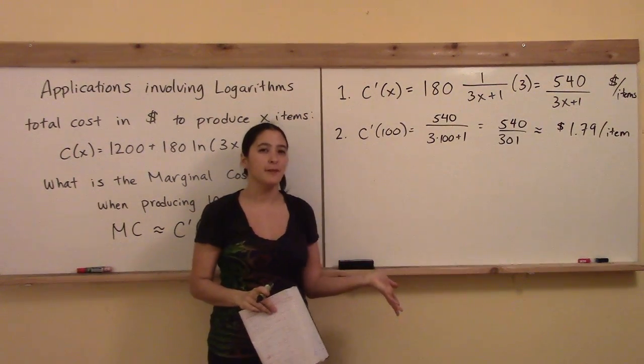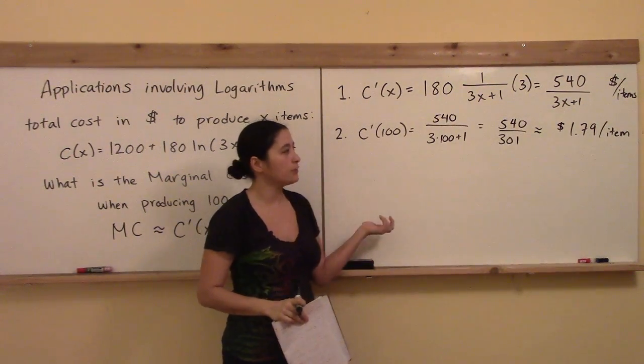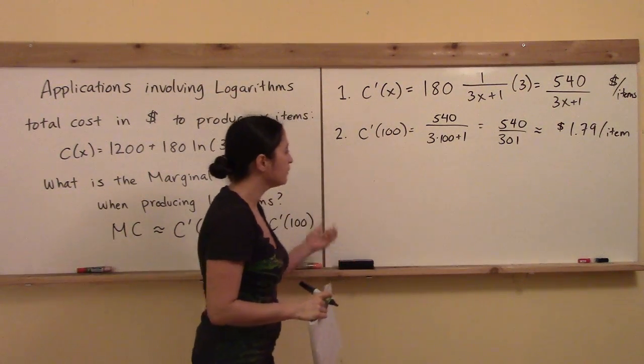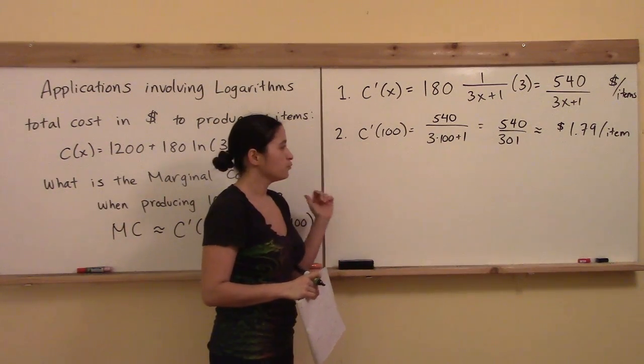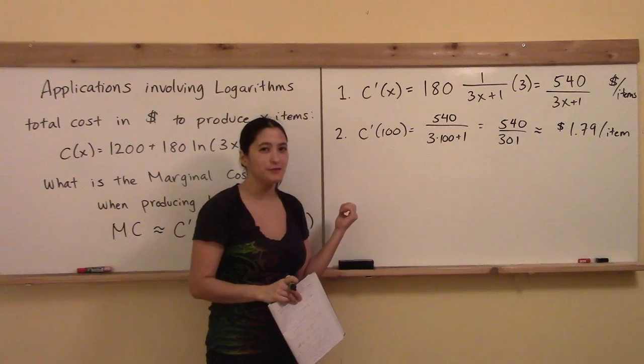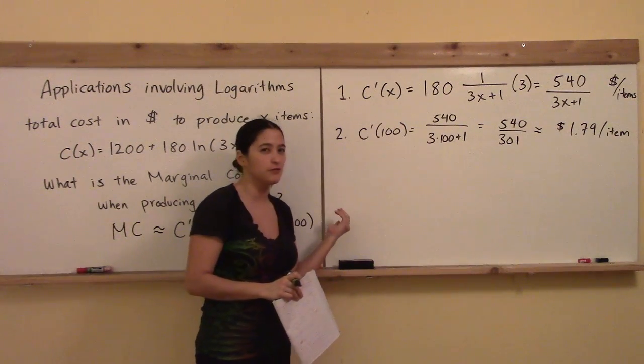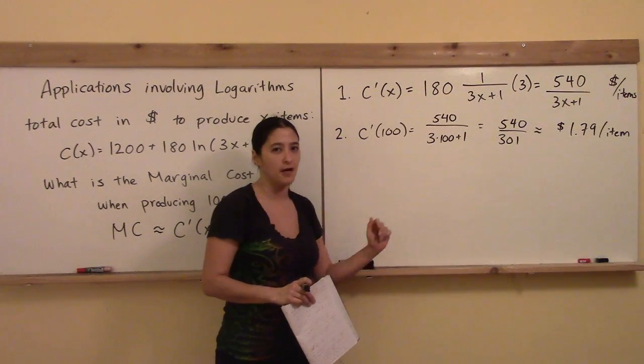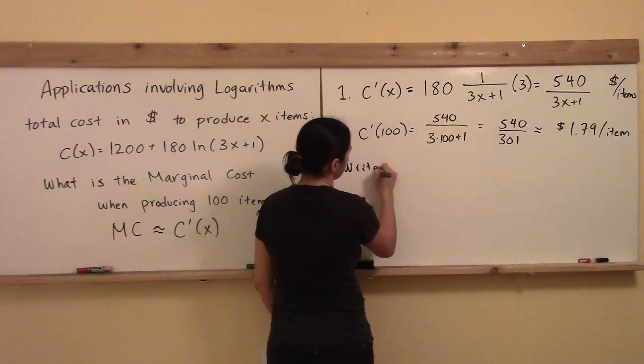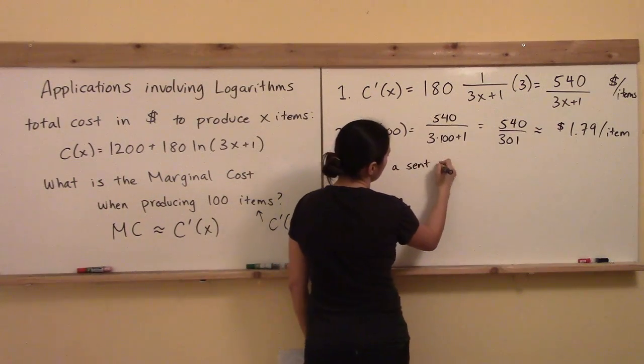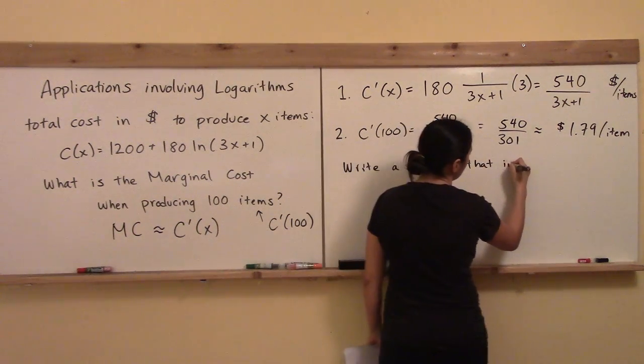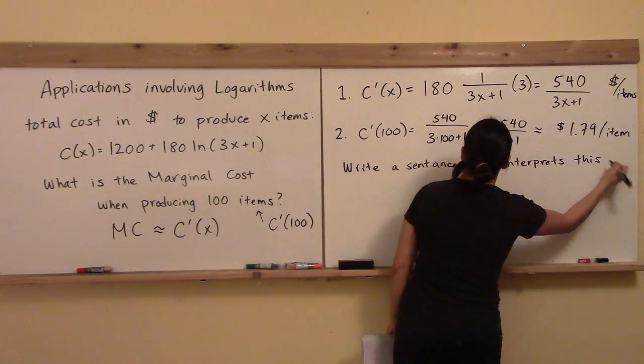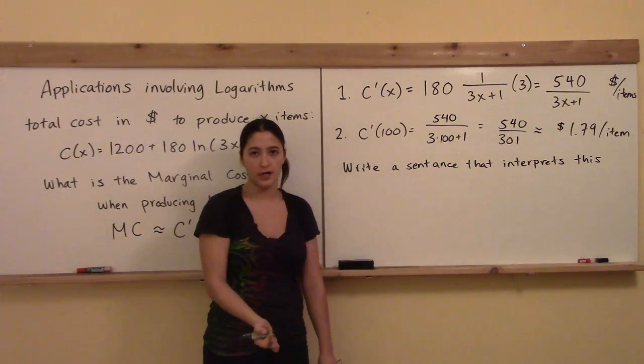So now let's spend a little extra time in this application problem to interpret the value that we got of 1.79. $1.79 per item, what does this actually mean? Do you know what it means? I would wonder if you do, so why don't you try to test yourself right now and write down a sentence right here that interprets that value. Write a sentence that interprets this. Go ahead, try it by yourself.